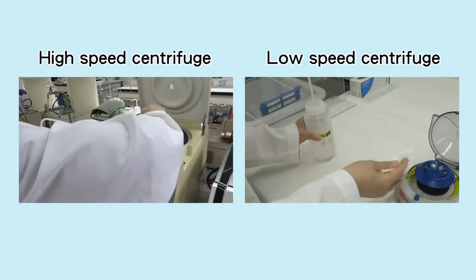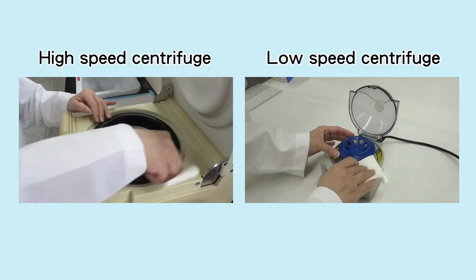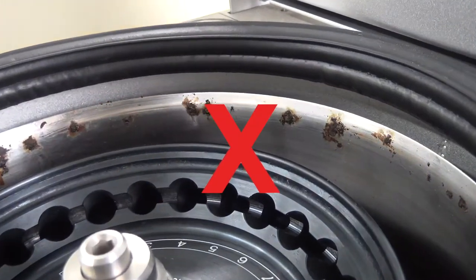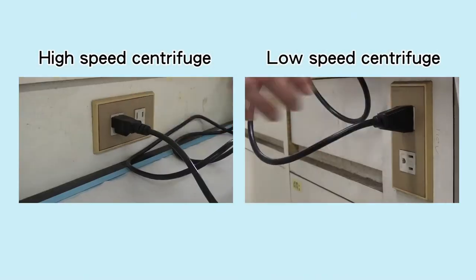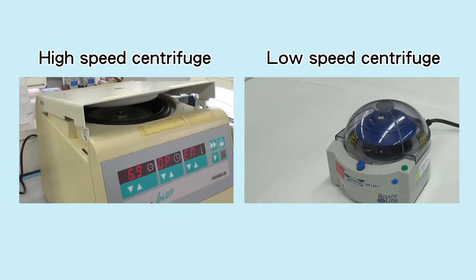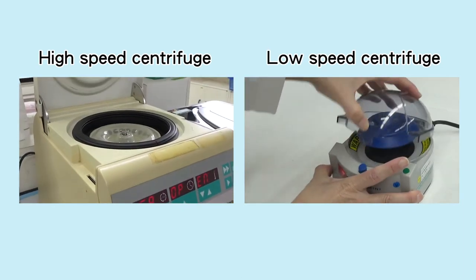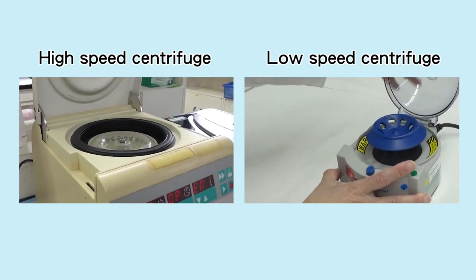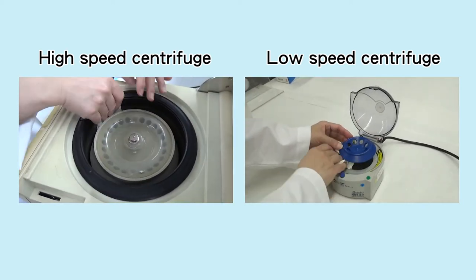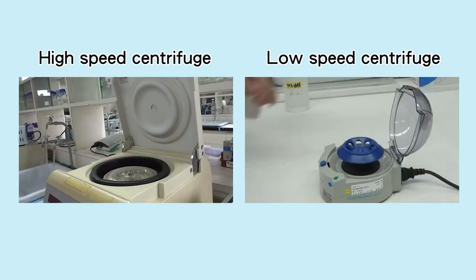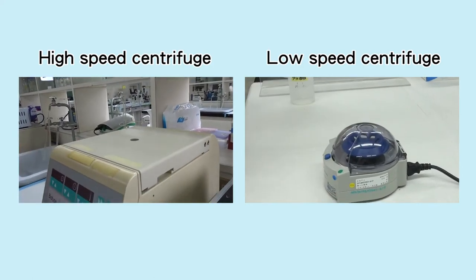When operation of the centrifuge is finished, please wipe it clean and keep it dry to avoid rusting. Finally, turn off the power and unplug the plug. If it was used in low temperature, please open the lid to allow for return to room temperature and wipe the water drops inside the centrifugal tank. When it is not in use, please close the lid to avoid dust settlement.